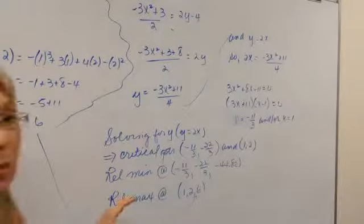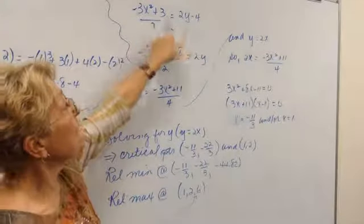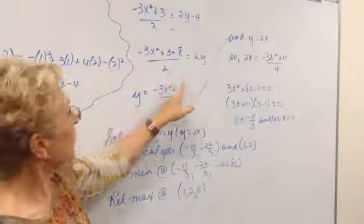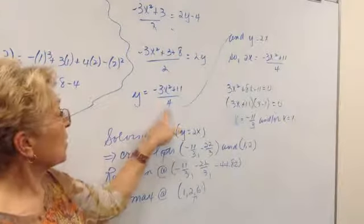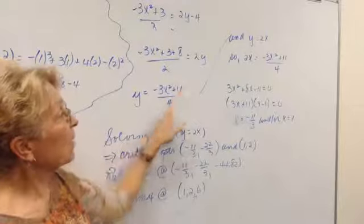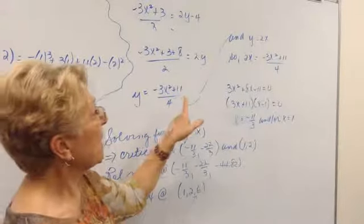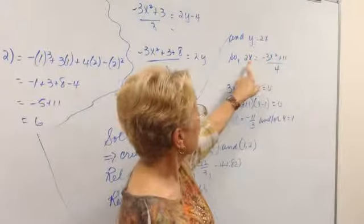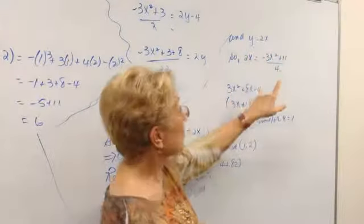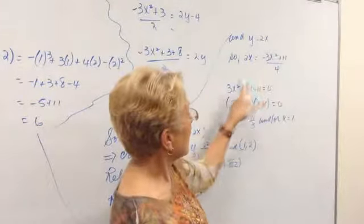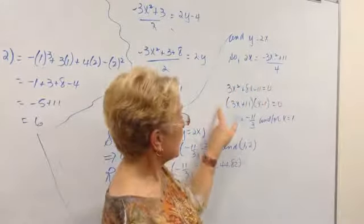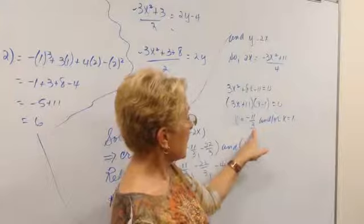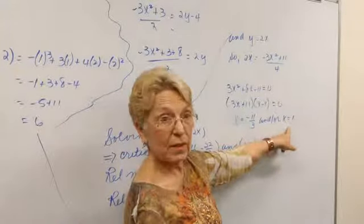So now we're going to set our lambdas equal to each other. And doing a little bit of algebra, we come up with y equals minus 3x squared plus 11 over 4. And we know that y is equal to 2x. So 2x must equal this expression for y. And do a little bit more algebra. And believe it or not, it factors, giving us x equals minus 11 over 4 and x equals 1.